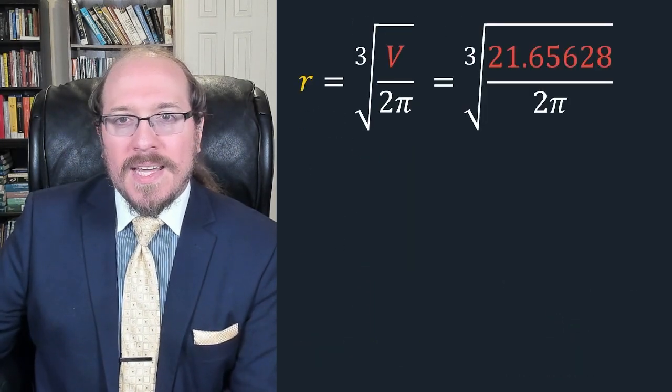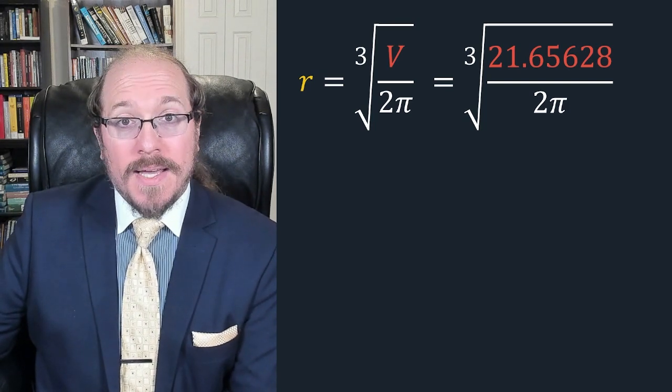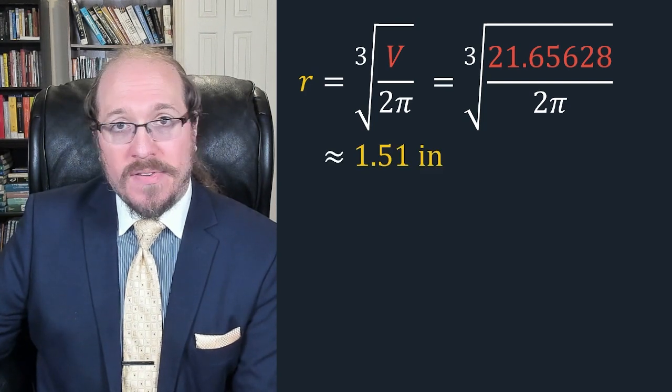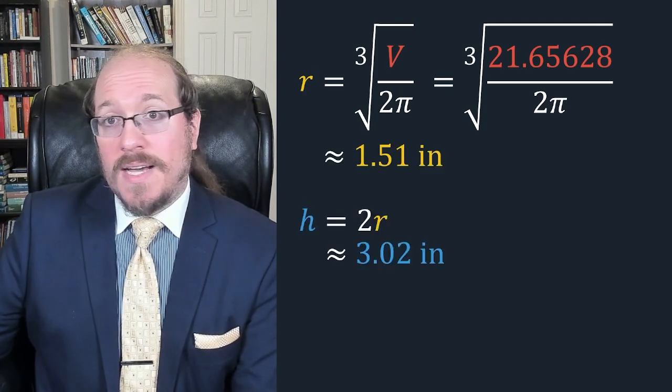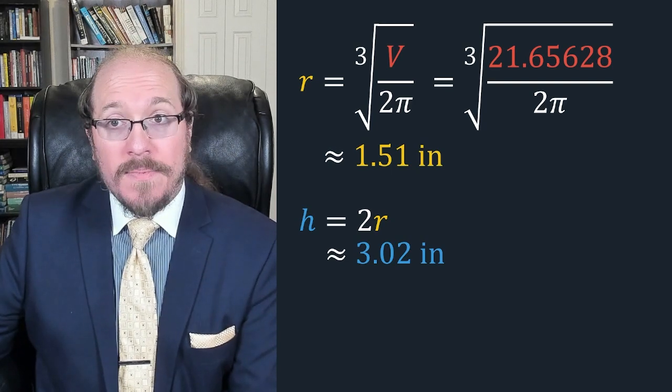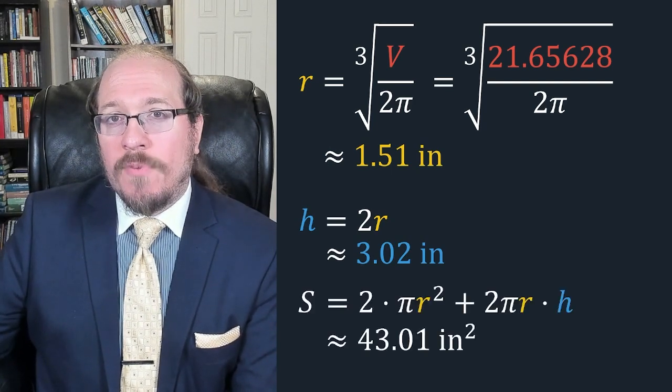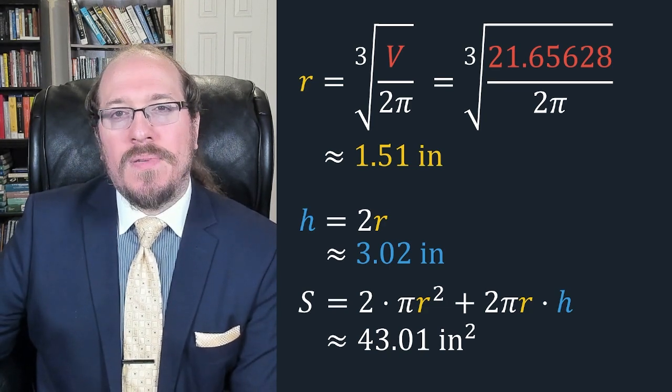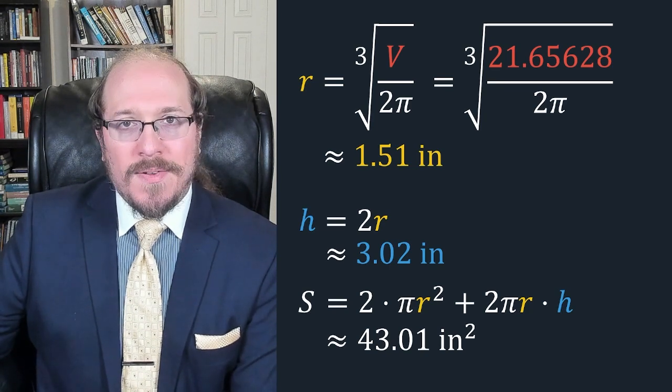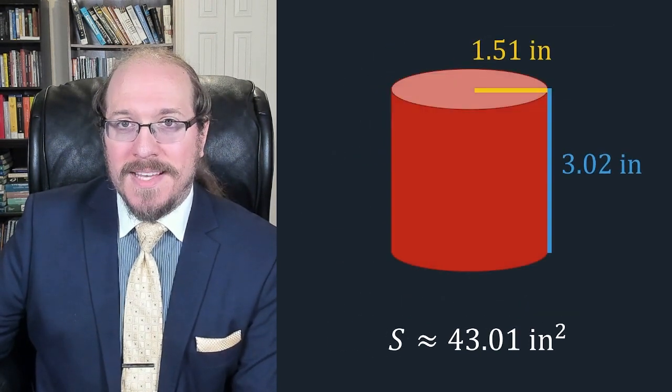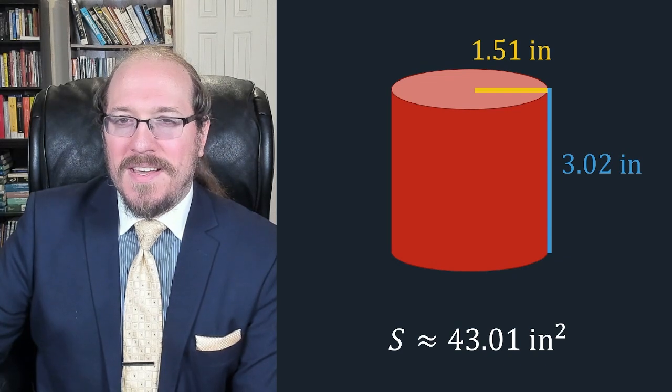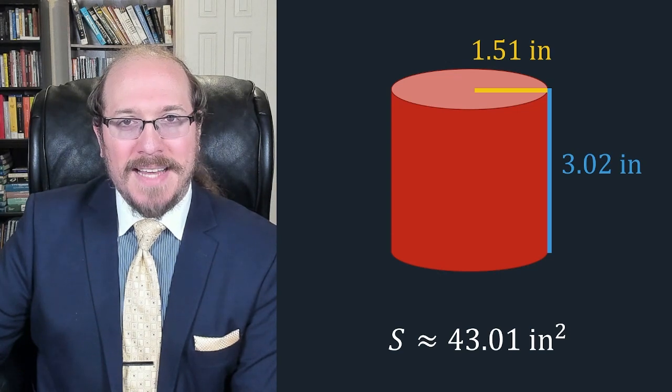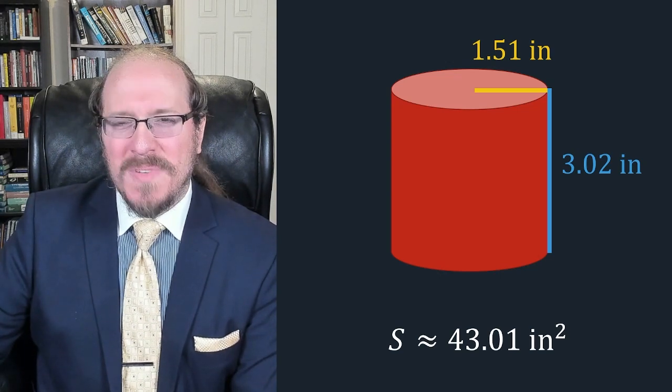Remembering that V equals about 21.65628 cubic inches and plugging that in we get a radius of about 1.51 inches for the can. That gives us a height of about 3.02 inches, exactly double that, and a surface area of about 43.01 square inches. That would be the minimum possible surface area of a 12 ounce soda can. And it looks like this. Now I don't know about you but I don't think I've ever seen a soda can that looks like that. Seems a little chunky. What gives?